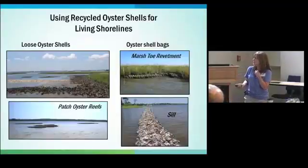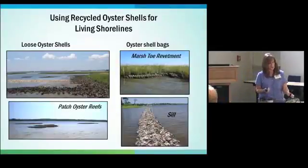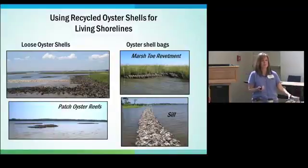For marsh toe revetments and oyster shell bag sills, bagging keeps the shells in place rather than scattering like loose patch reefs. The plastic mesh bags eventually become covered by oysters — in areas with good oyster recruitment — and serve as the glue holding the reef together. Once covered, the bags are no longer visible, making the concern about plastic in the water a temporary one that's addressed as the reef matures.